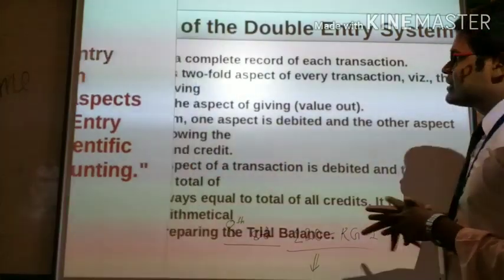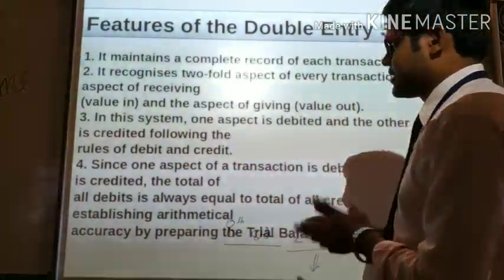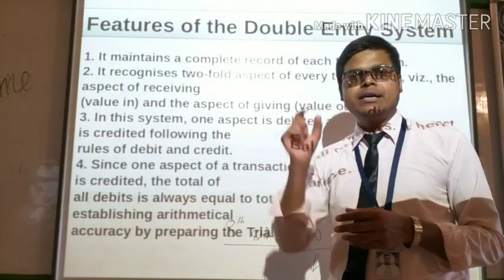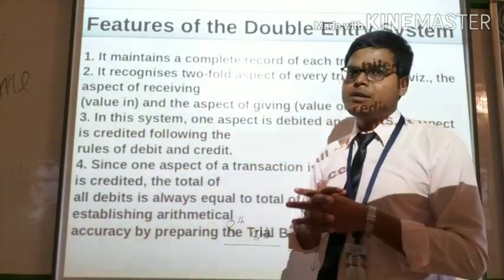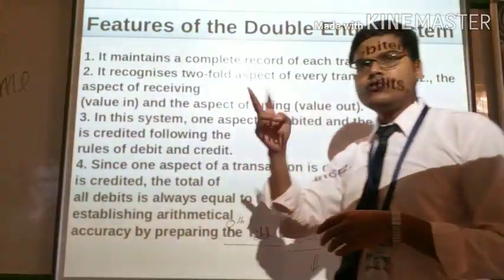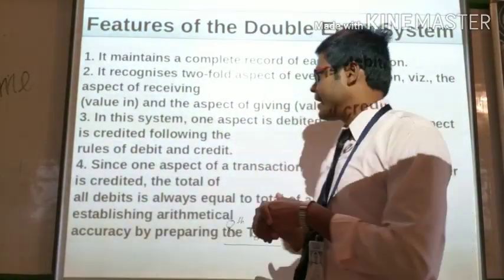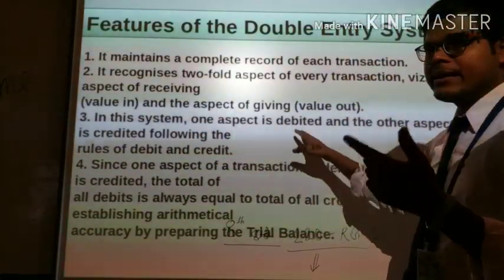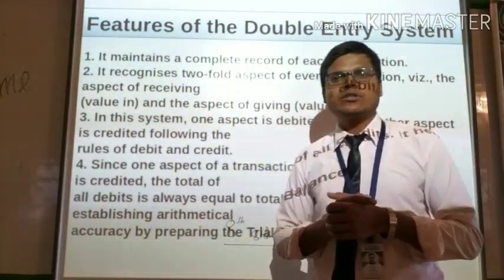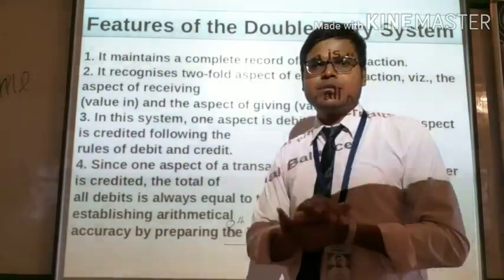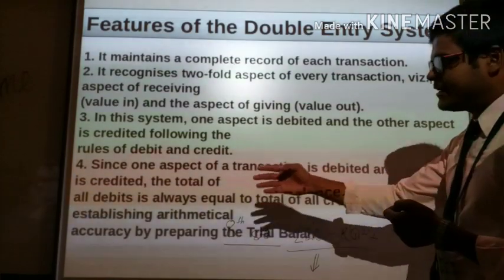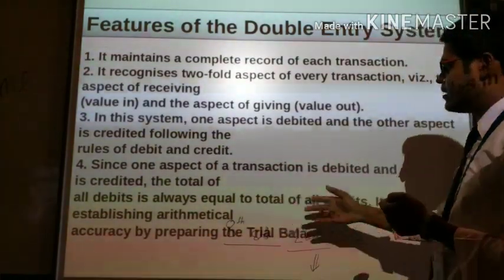Now next, the features of the double entry system. First, it maintains a complete record of each transaction. It recognizes the two-fold aspects of every transaction — that is, the aspect of receiving and the aspect of giving. One aspect is debited and the other is credited following the rules of debit and credit. The total of all debits is always equal to the total of all credits.